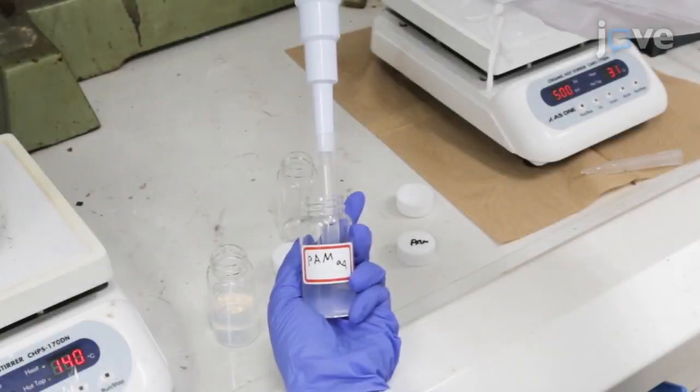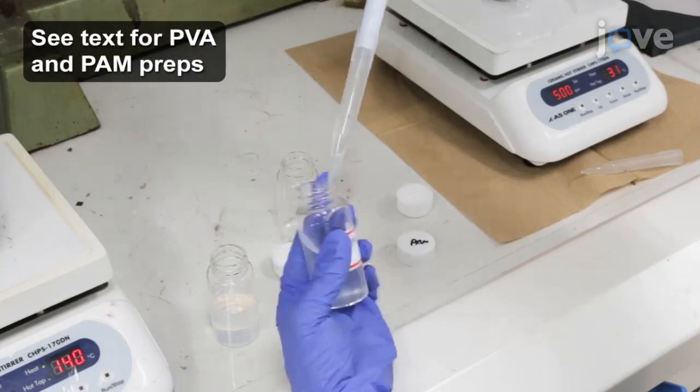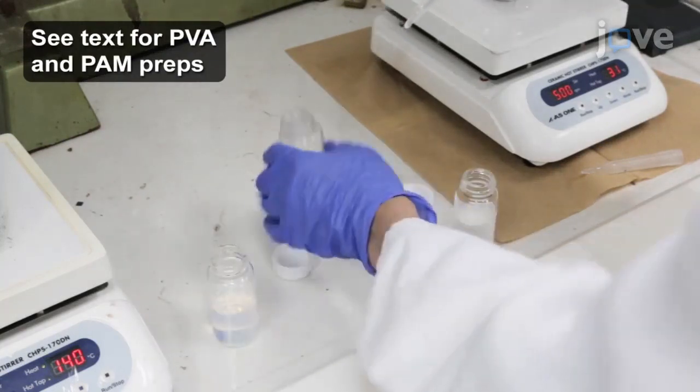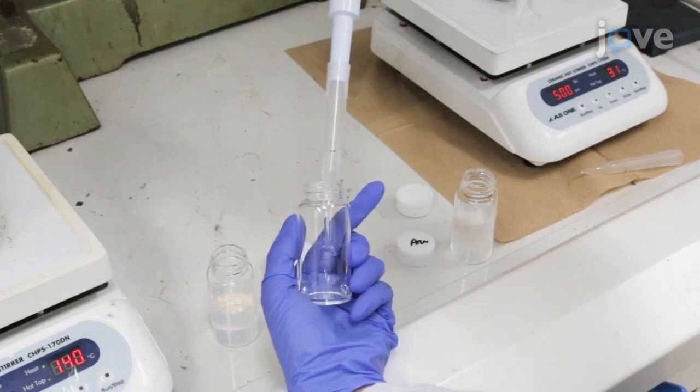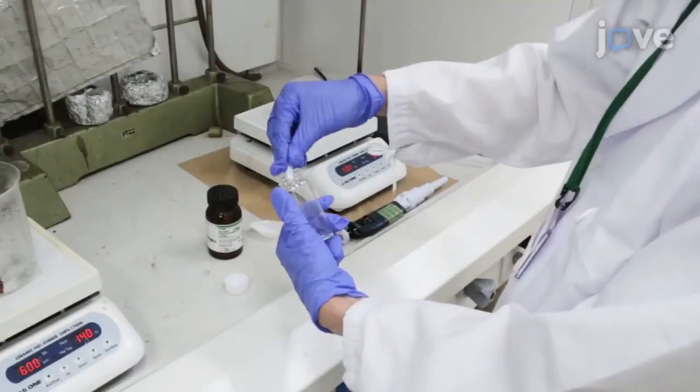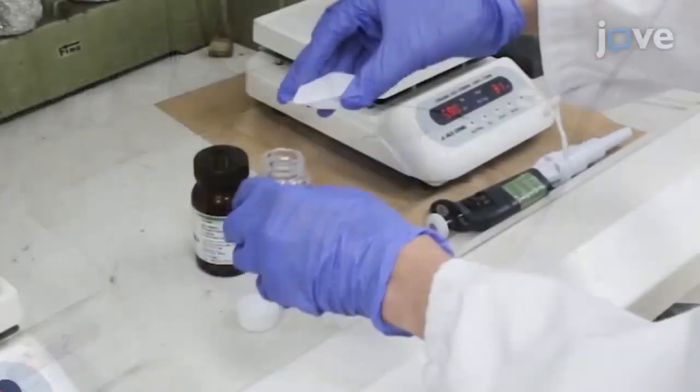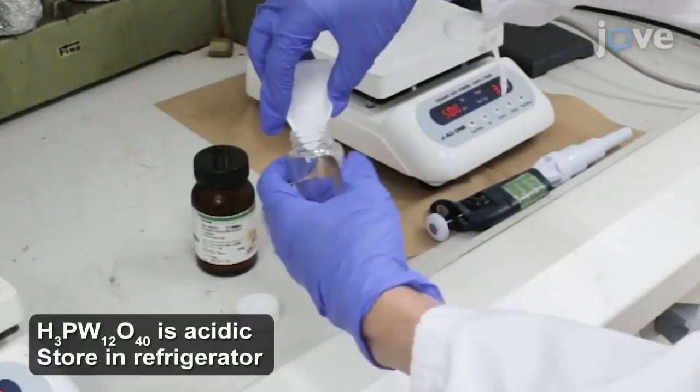First, add 2 mL of polyvinyl alcohol solution and 2 mL of polyacrylamide solution to a 50 mL vial. Then, add a triangular-shaped stir bar and 1 g of phosphotungstic acid to the vial.